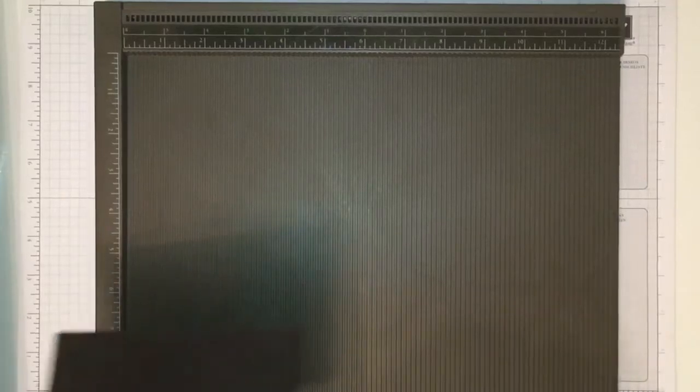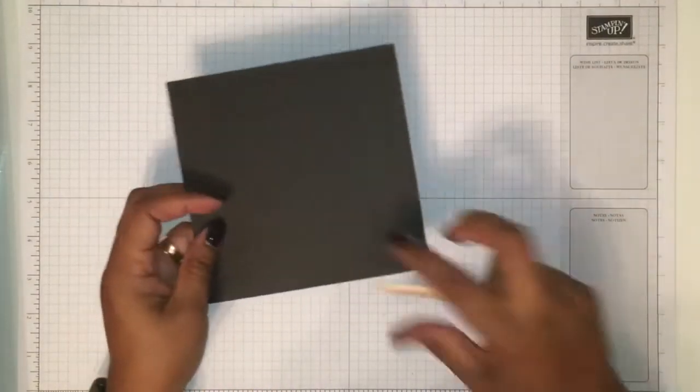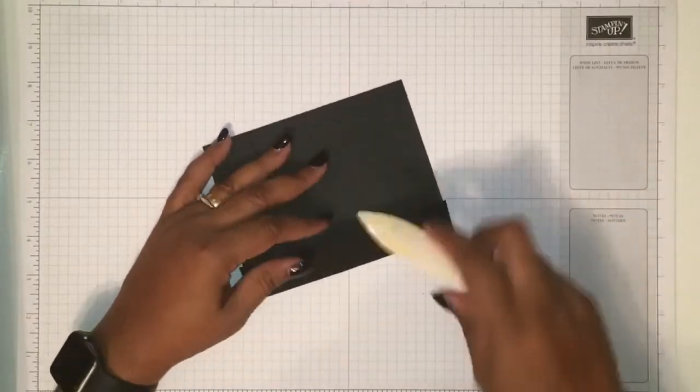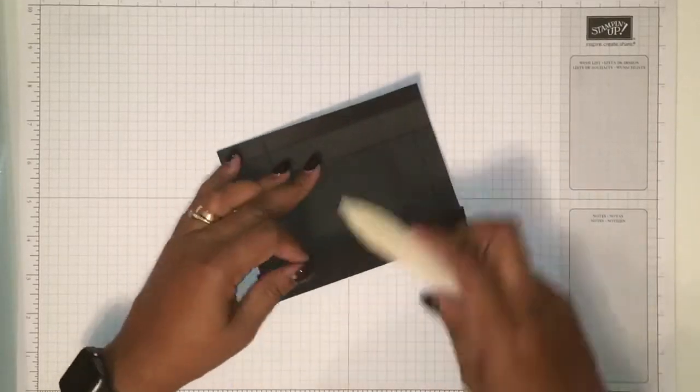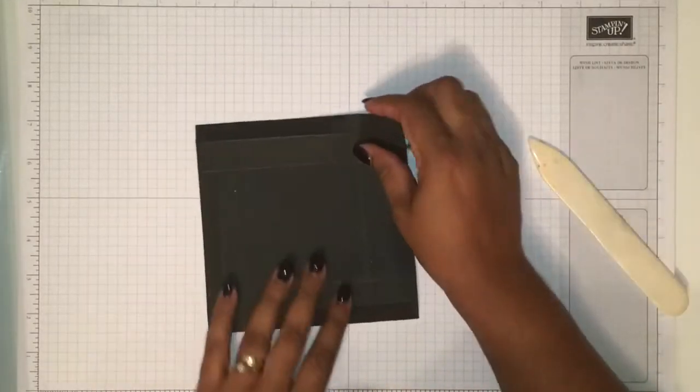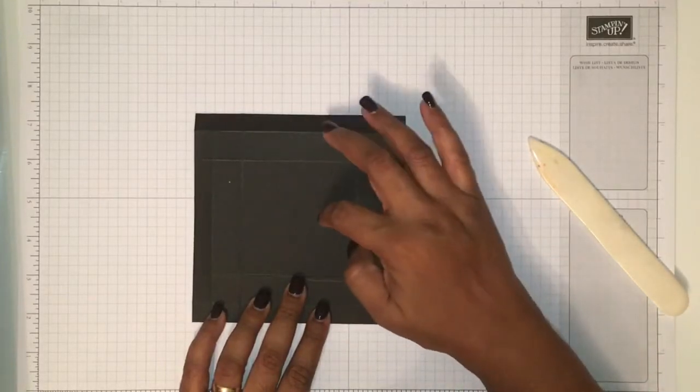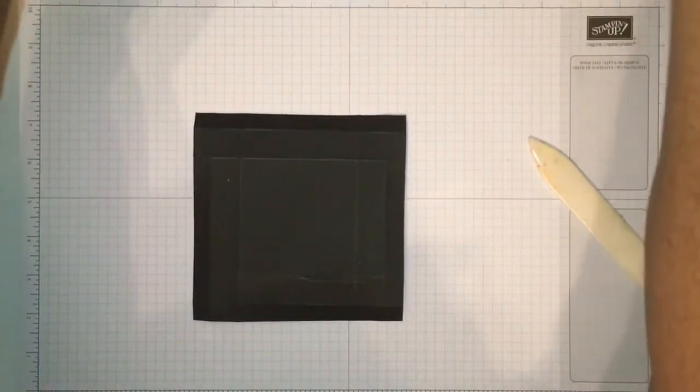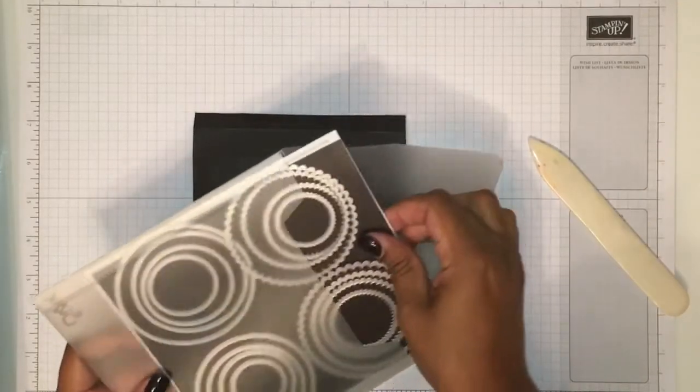Okay, this is all the scoring that we needed. Let's just put this away. Let's burnish the score lines that we did.